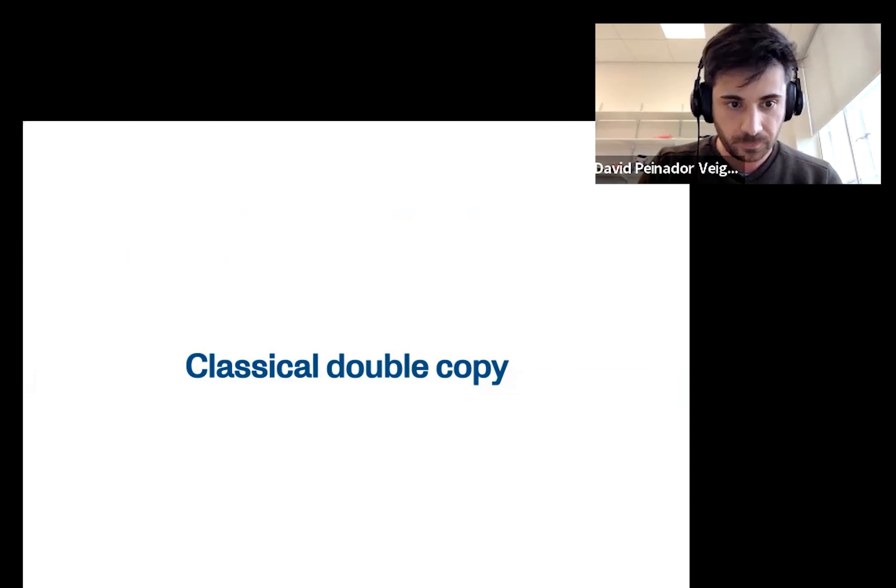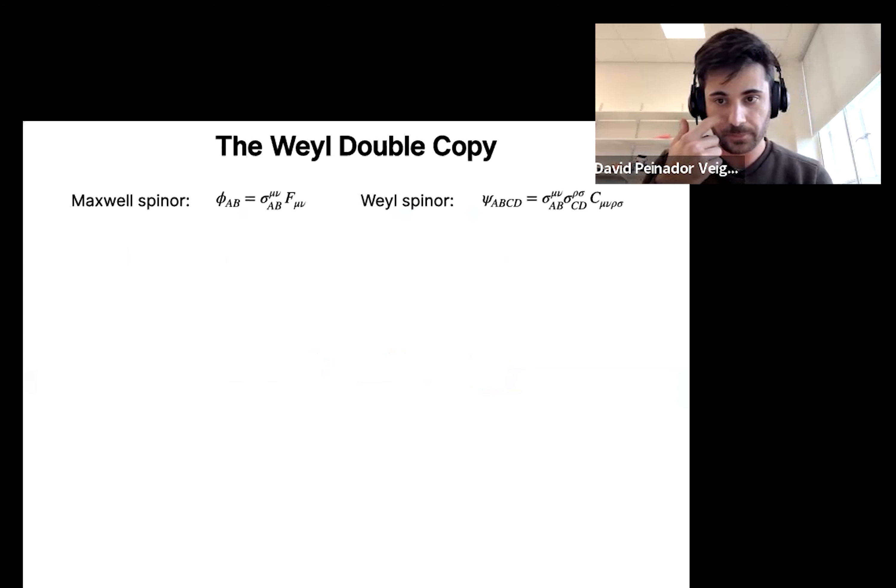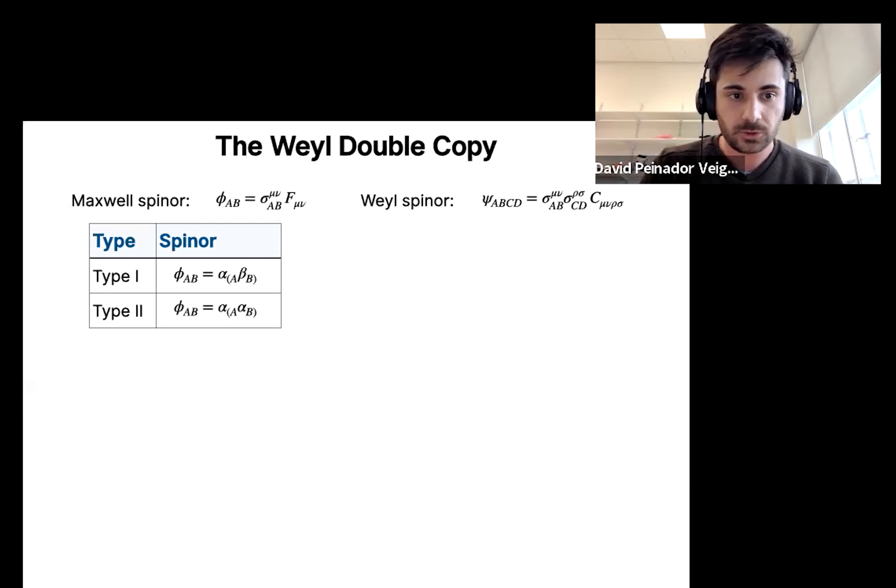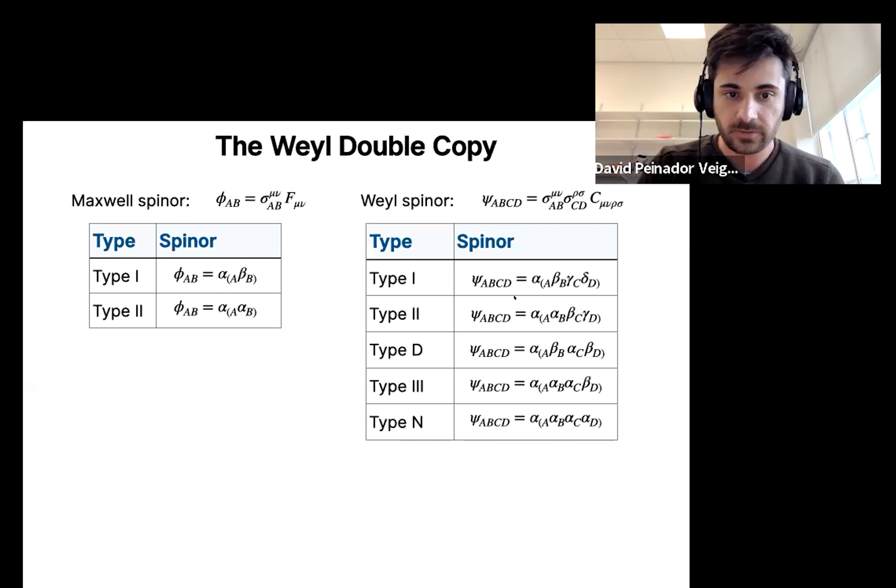It turns out that it does, and one realization of this is the Weyl double copy. I'm going to talk about spinors because they are the relevant objects, they are the equivalent of the scattering amplitudes in the previous slide. Again, as Marika introduced, in the previous talk, we have the Maxwell spinor, which is just the F_μν with some Pauli matrices and the Weyl spinor. The spinors are quite nice because they also allow us to classify solutions. So for example, the Maxwell spinor can be classified in type I and type II, depending on the multiplicities of the fundamental spinors. And you can do the same thing for the Weyl spinor.